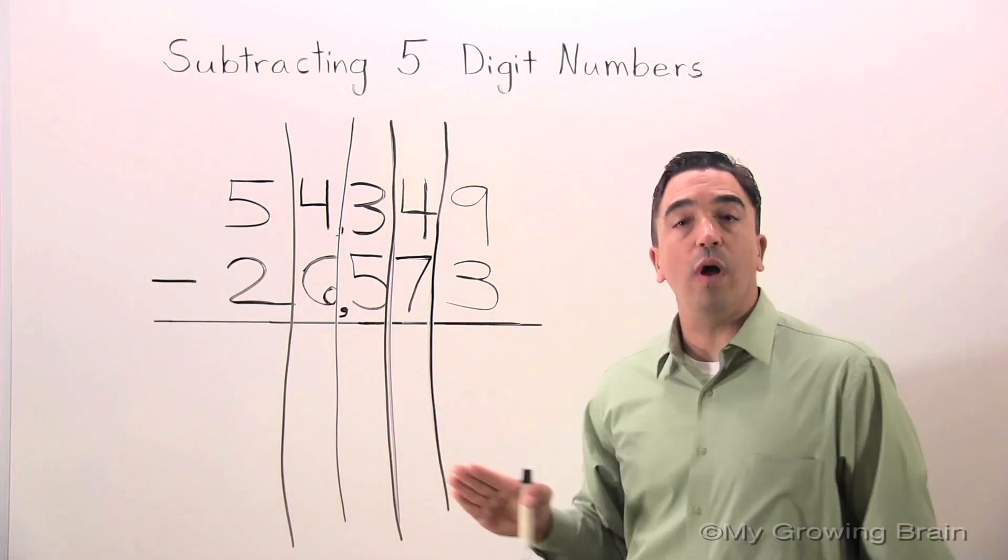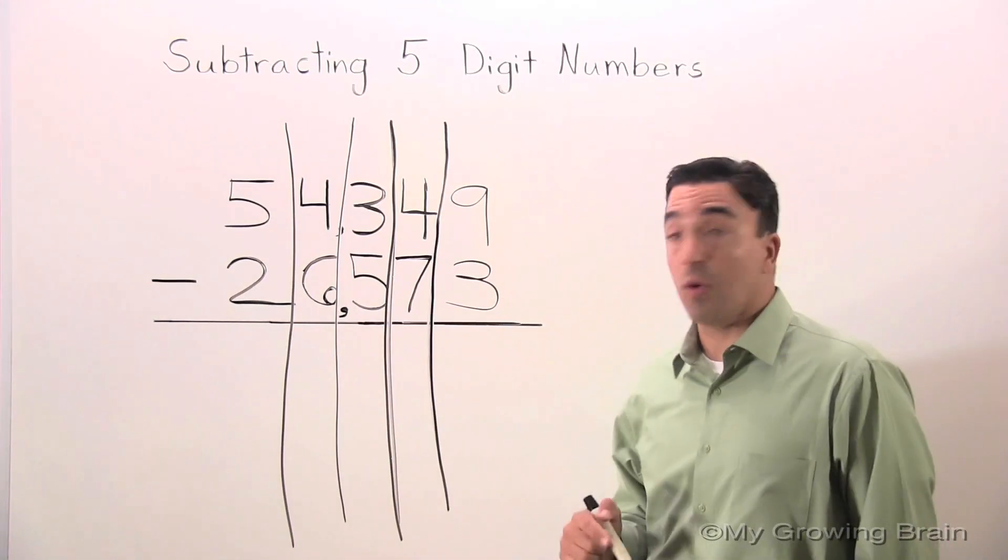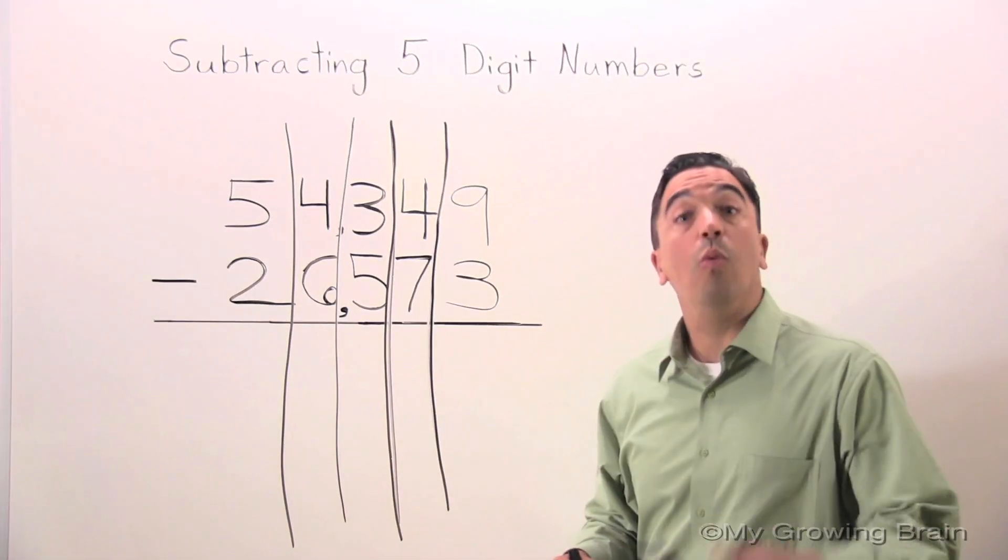Okay, we're going to start with the ones place. I'm going to subtract three from nine, or nine minus three, which is six.